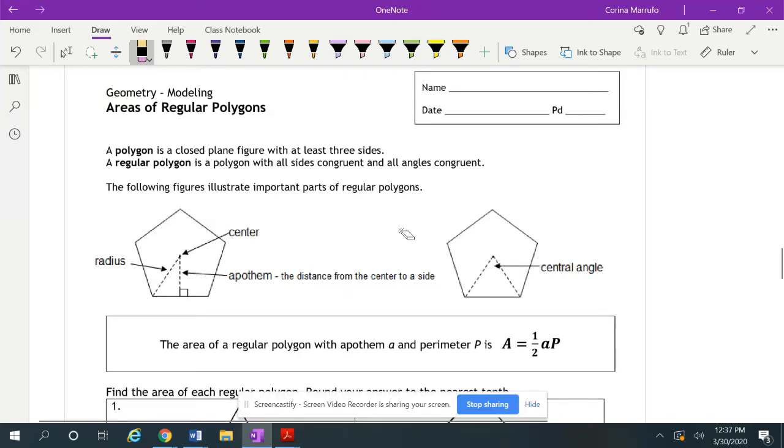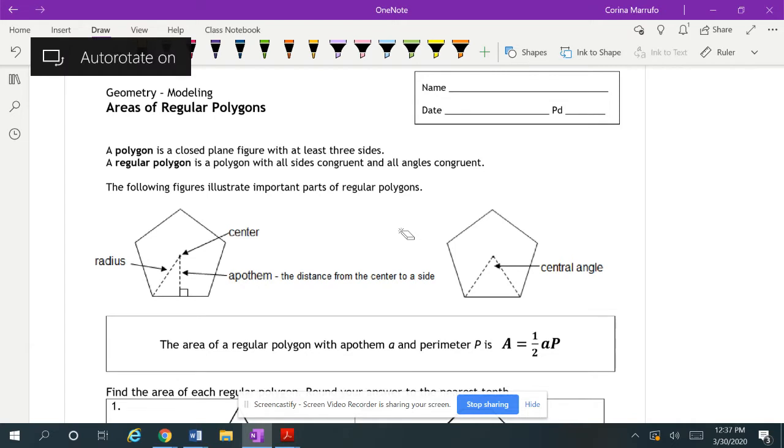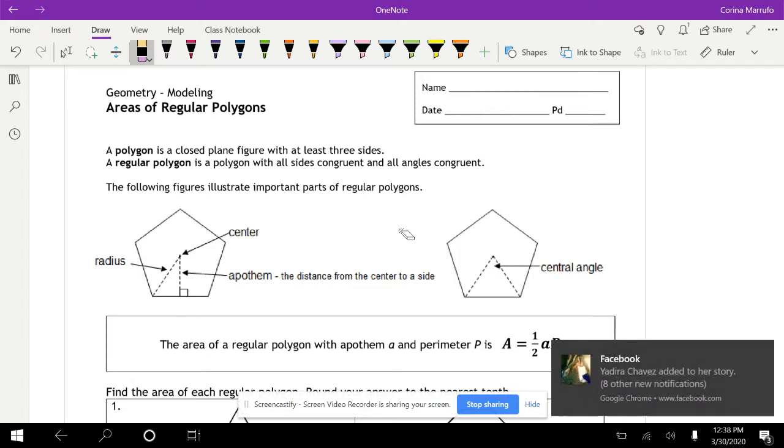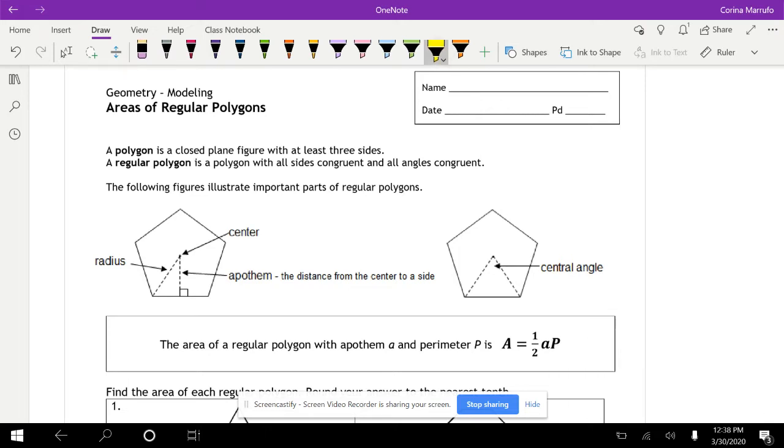All right, so today we're going to be learning about areas of regular polygons. A polygon is a closed plane figure with at least three sides. A regular polygon is a special polygon where all the sides and all the angles are congruent.